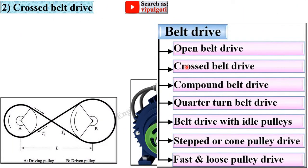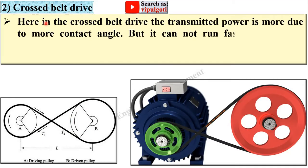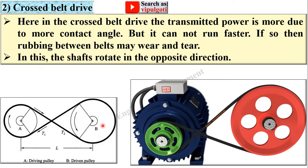Next: cross belt drive. Here in this figure you can see the belt is crossed, and that is why it is called cross belt drive. In cross belt drive, the transmitted power is more due to more contact angle — the contact angle is more on both pulleys so it can transmit more power, but it cannot run faster, otherwise rubbing between belts may cause wear and tear. In cross belt drive, the shafts rotate in opposite directions: if shaft A rotates clockwise, shaft B will rotate anti-clockwise.